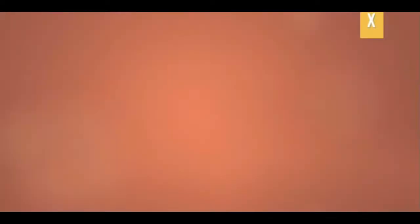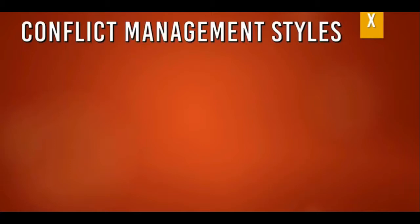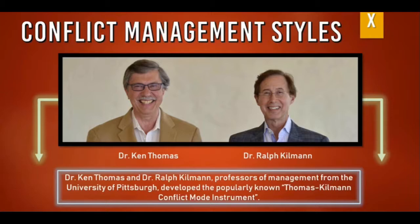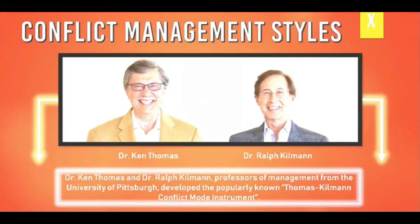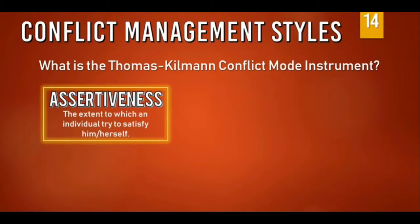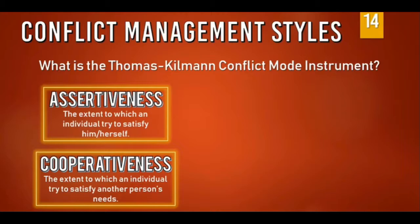Now we focus on the conflict management styles, developed by Dr. Ken Thomas and Dr. Ralph Kilman, management professors from the University of Pittsburgh. They developed the Thomas-Kilman Conflict Mode Instrument. This instrument focuses on two determinants: Assertiveness — the extent to which an individual tries to satisfy him or herself — and Cooperativeness — the extent to which an individual tries to satisfy another person's needs. Under these two determinants are five styles: Competing, Accommodating, Compromising, Avoiding, and Collaborating.